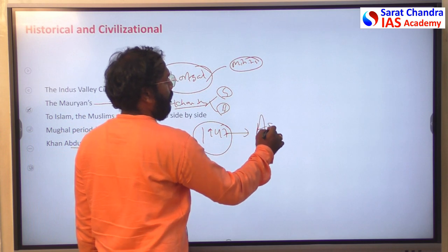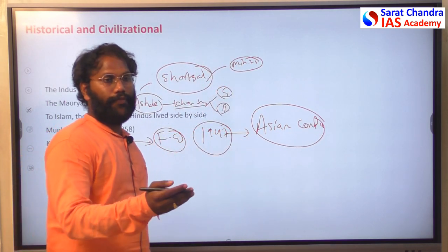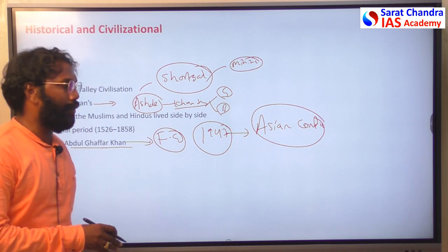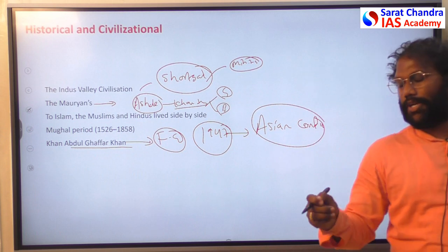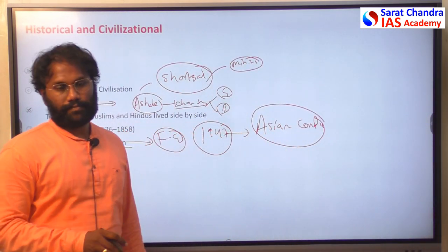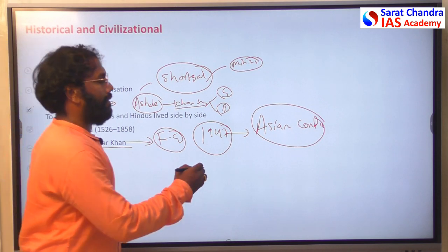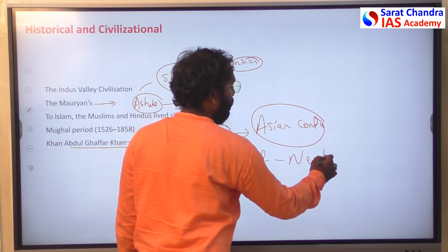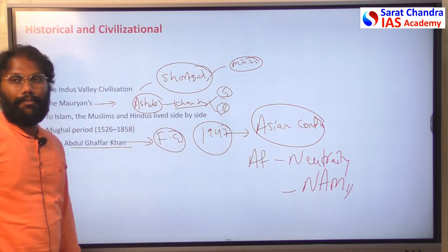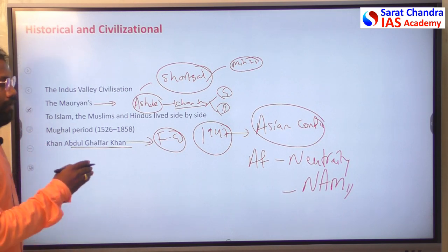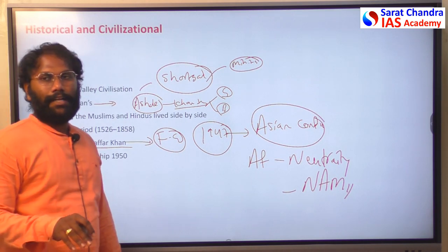After independence, Nehru conducted the Asian Relations Conference, considered the first Asian conference, where representatives from different Asian countries came to India and pledged unity and solidarity to resolve issues of common concern. At that time, Afghanistan maintained a policy of neutrality similar to India's Non-Aligned Movement policy. Both countries had common concerns and signed a Treaty of Friendship in 1950 to engage in different fields.